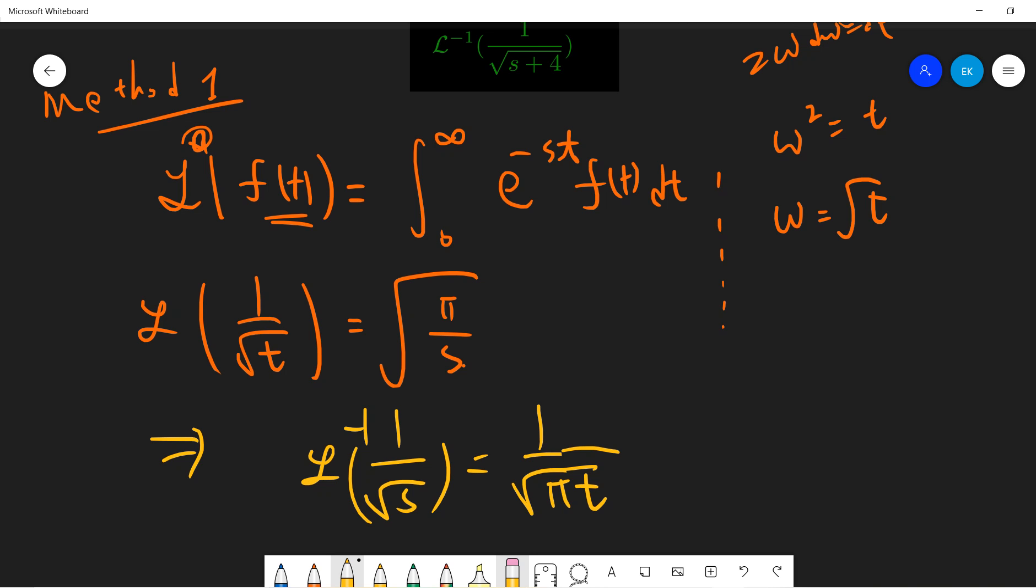Then you use the shift theorem, so the inverse Laplace transformation of 1 over square root of s plus 4, you just times something, times exponential negative minus 4t, 1 over square root of pi t.